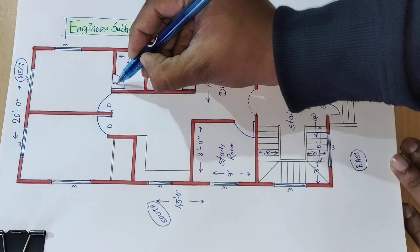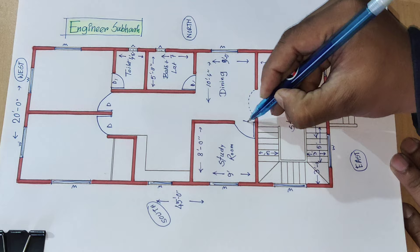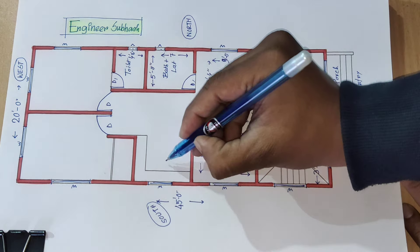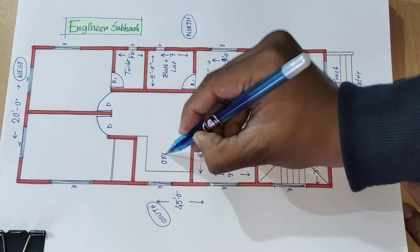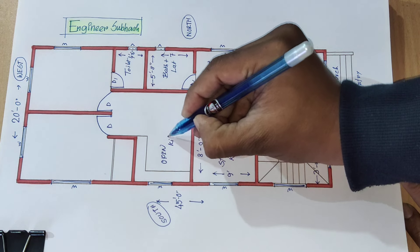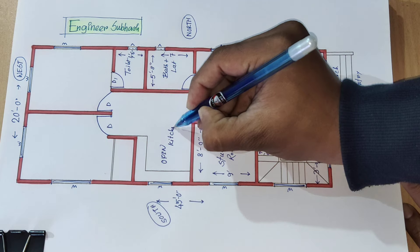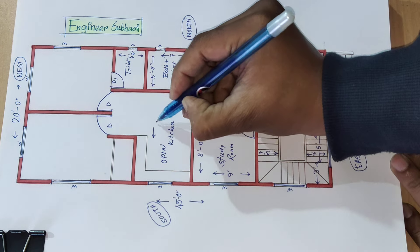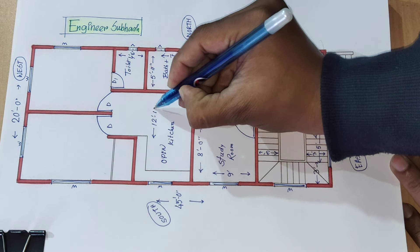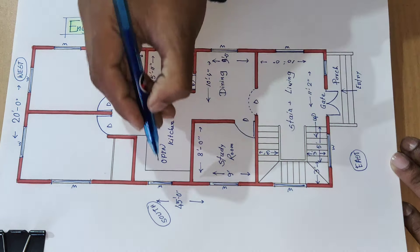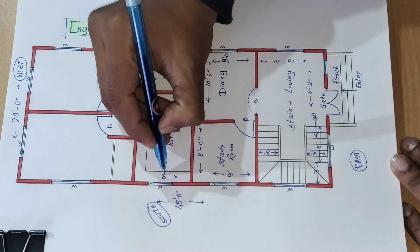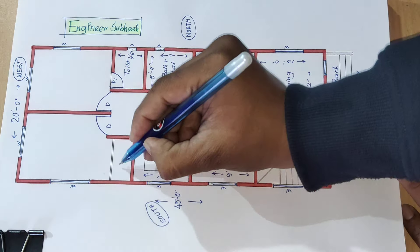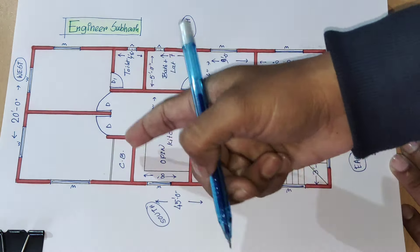Next door D1, door, gate. Open kitchen. Distance: 12 feet 10 inch. Distance coming later: 8 feet. CB cupboard, house room, car to bedroom.